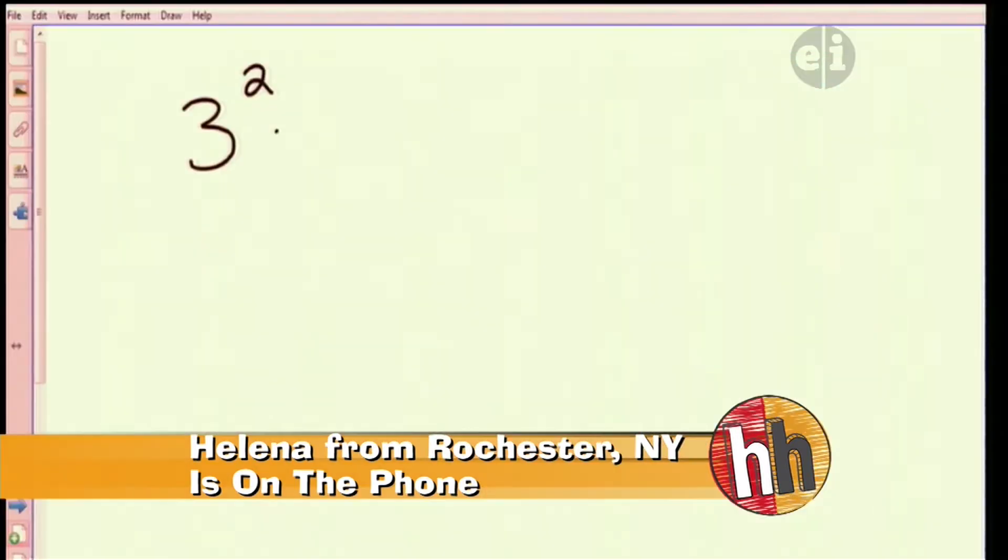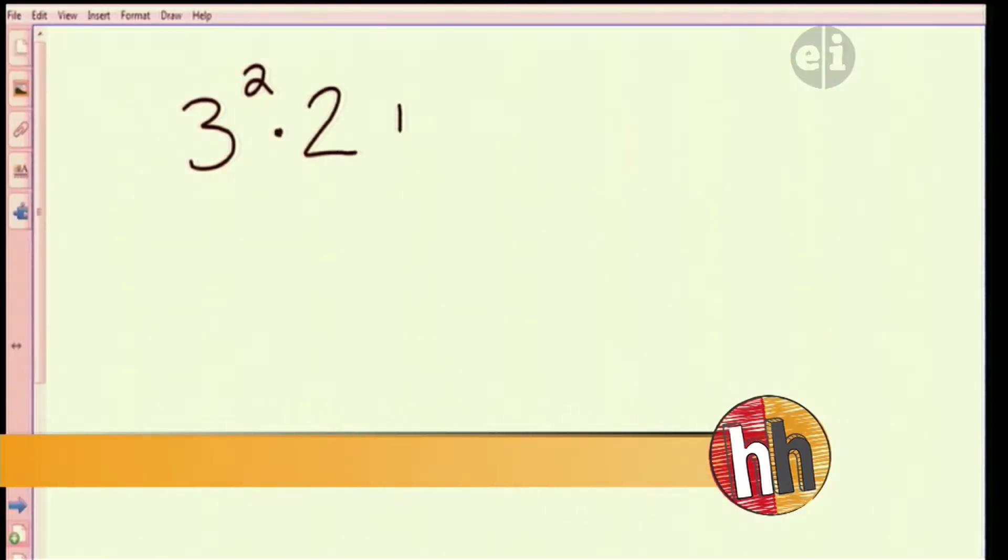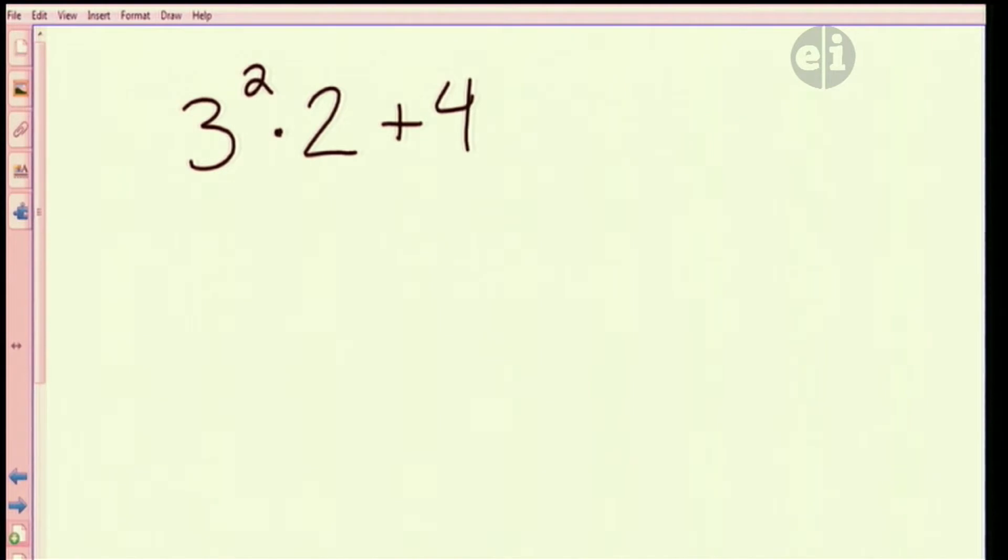Three squared times two plus four, yep. Did you write it this way with the dot for the multiplication? Yeah. Okay great. So for some people out there who may not realize, the dot means times. Okay, so this is gonna be three squared times two plus four. So any idea where we're gonna start with this thing?